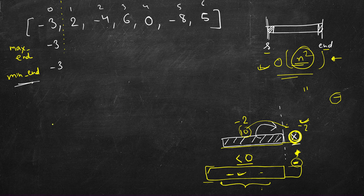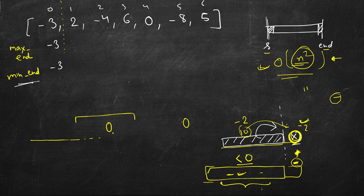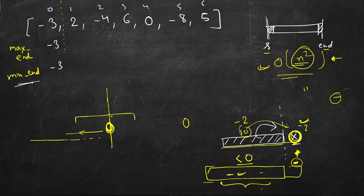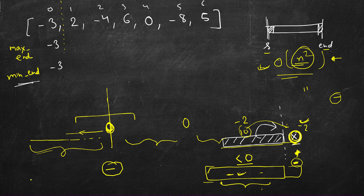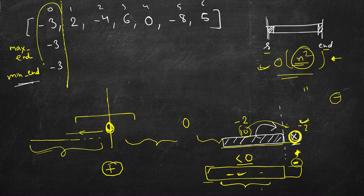Zero and negative play different roles. If you include a zero in the subarray, the product becomes zero — it resets everything, breaking the array into separate chunks. A negative number, on the other hand, flips the sign: a large negative value multiplied by another negative becomes a large positive. So we need to track all three: max, min, and handle zero resets.